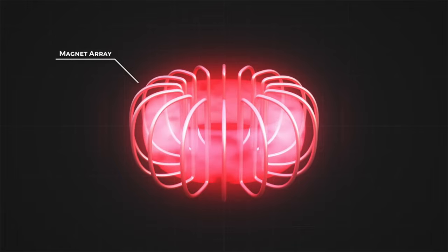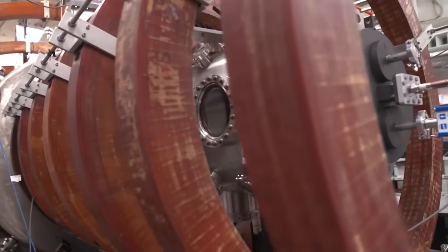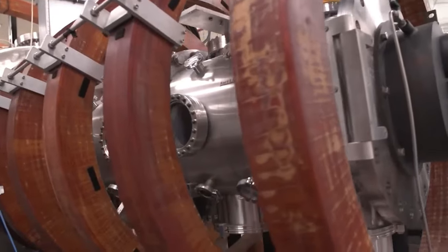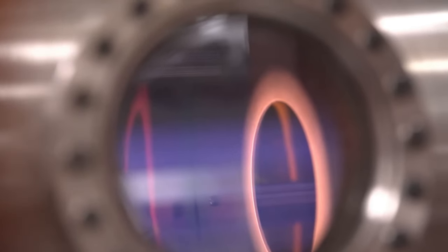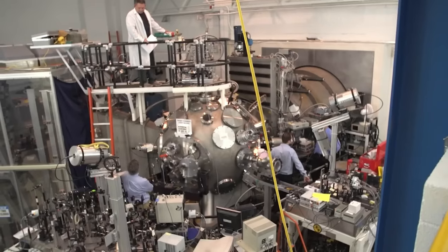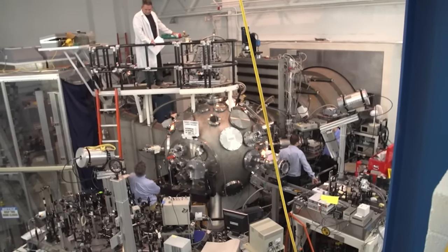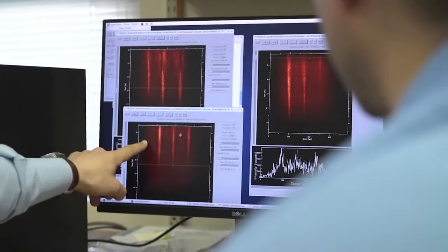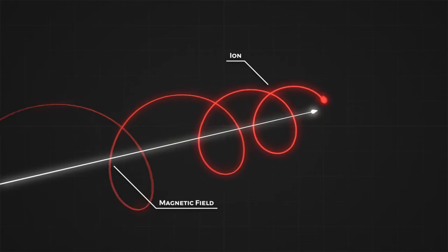However, not all the uranium-235 is consumed in the reaction. Some of it is converted into other elements called fission products, which are highly radioactive and have to be stored safely for thousands of years. Some of it is also transformed into heavier elements called actinides, which can be used as fuel for other types of reactors but also pose a risk of proliferation and terrorism.